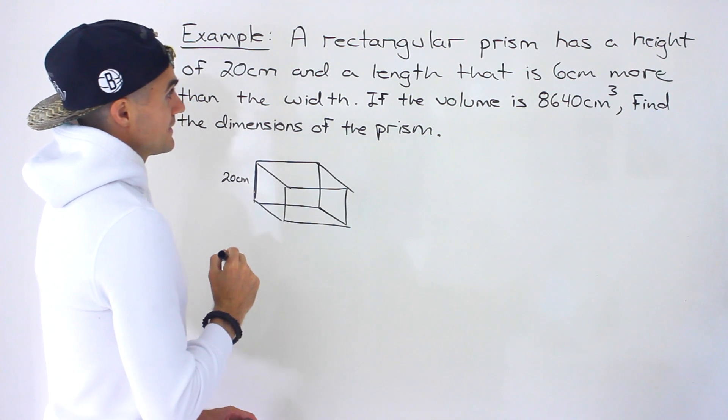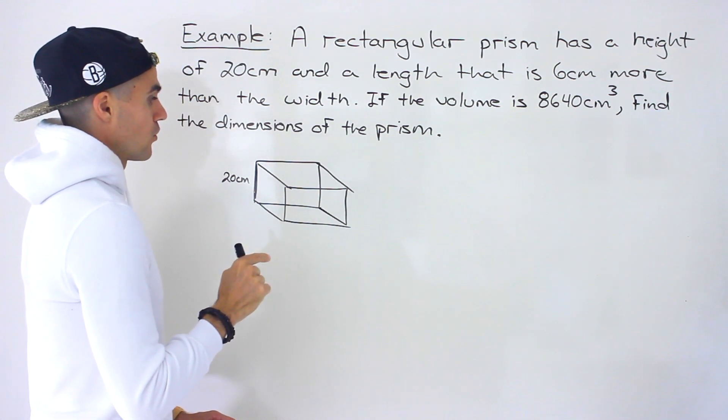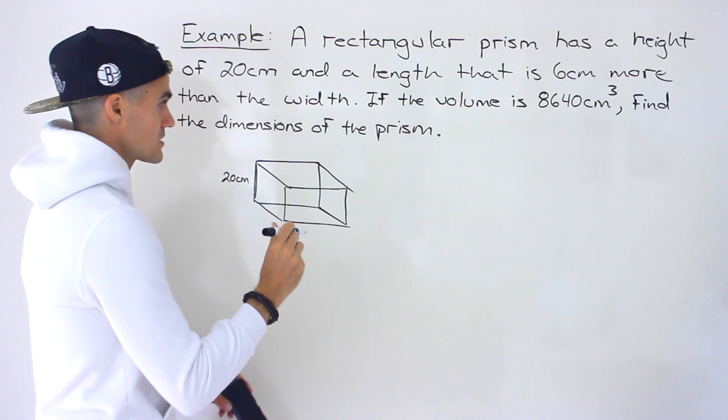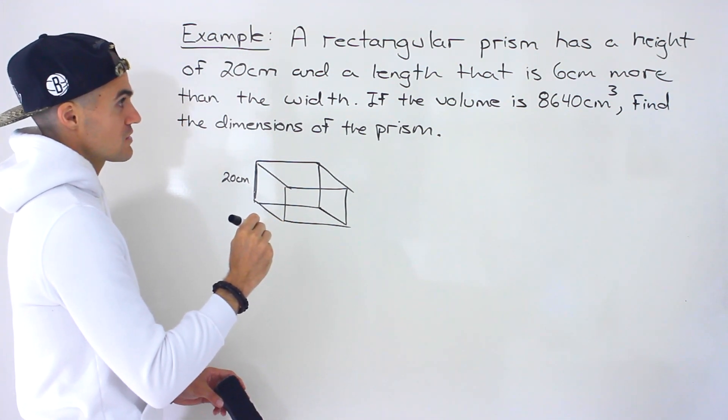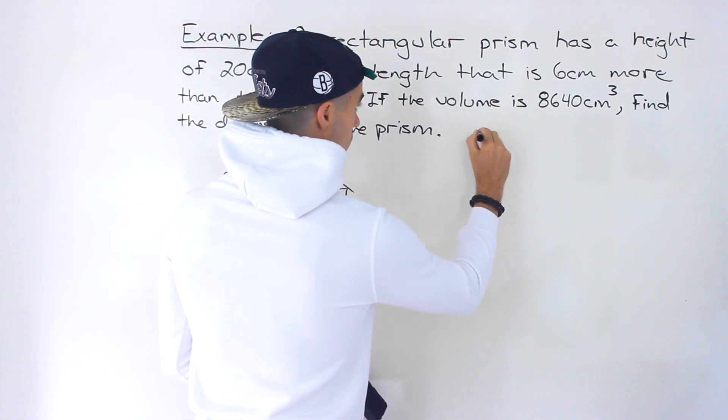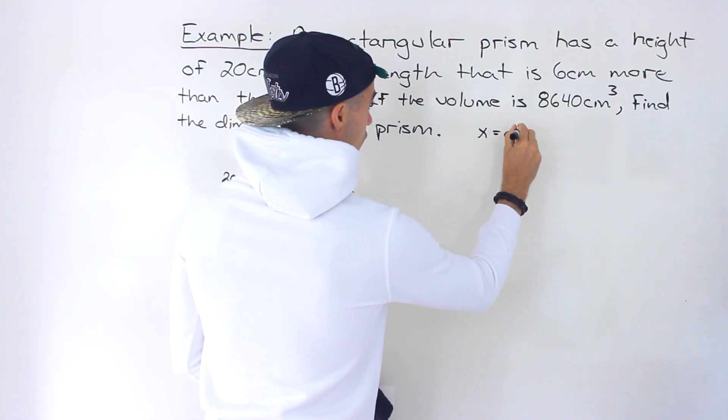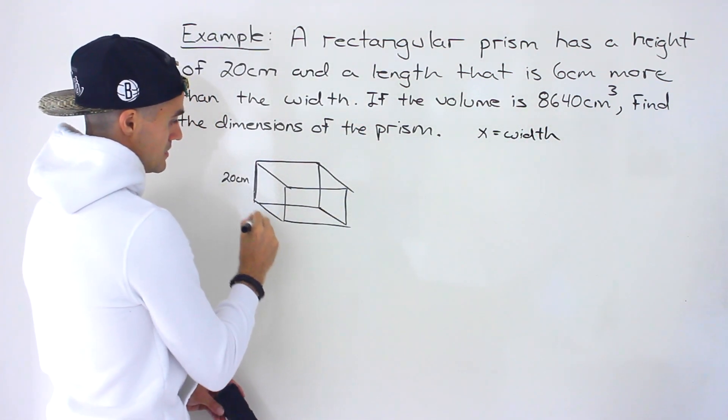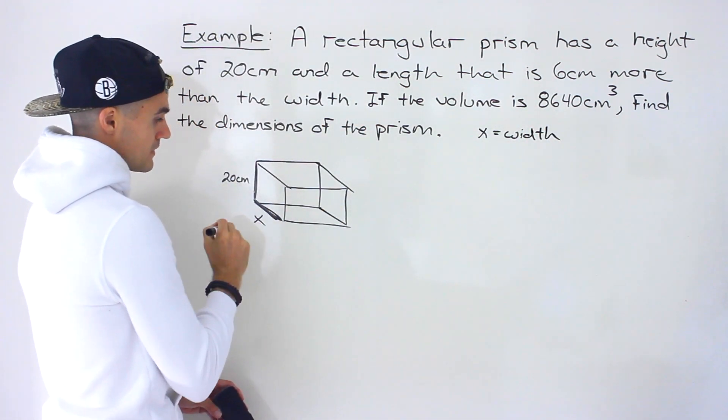Then we're told that the length is 6 centimeters more than the width. We're not told the actual values but we're told how they relate. So we can introduce a variable here. I'm gonna let x equal whatever the width of this rectangular prism is gonna be. So that's gonna be this over here. That's gonna be the width.